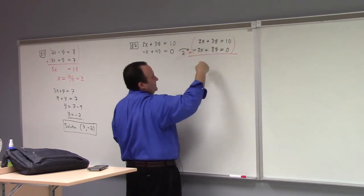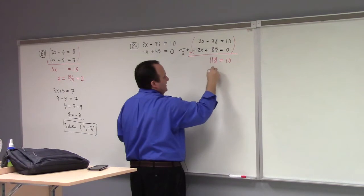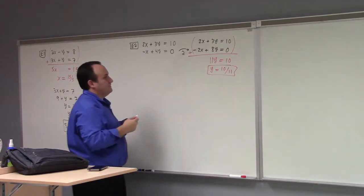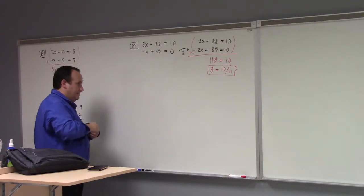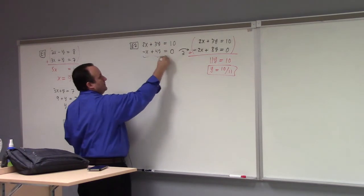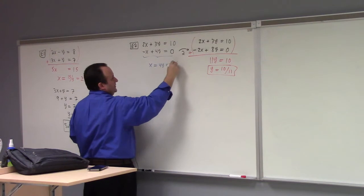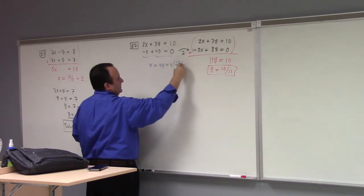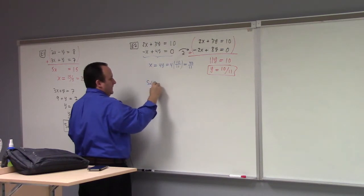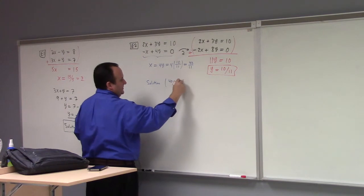So we add these — the 2x and minus 2x cancels. We get 11y equals to 10. So apparently y is equal to 10 elevenths. And what's x? I go back up — x is equal to 4y. So that's 4 times 10 over 11, also known as 40 over 11. So my solution is 40 over 11 comma 10 over 11.